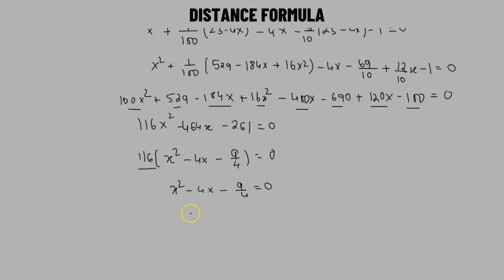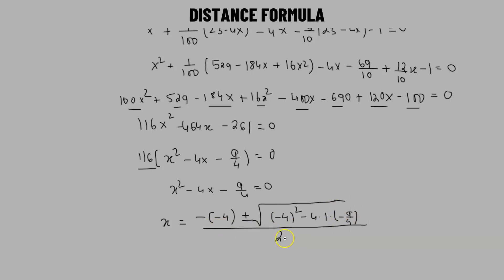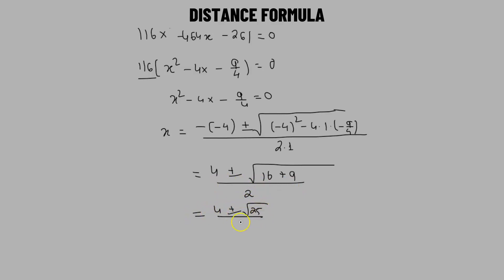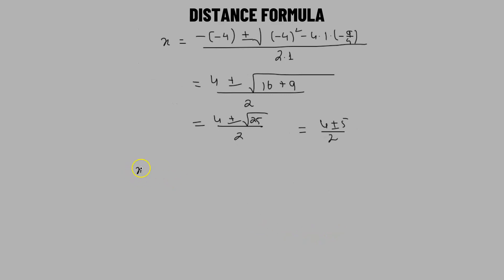Using the quadratic formula: X equals (4 plus or minus square root of (16 plus 9)) divided by 2, which gives (4 plus or minus square root of 25) divided by 2, or (4 plus or minus 5) divided by 2. So X equals 9/2 or X equals negative 1/2.